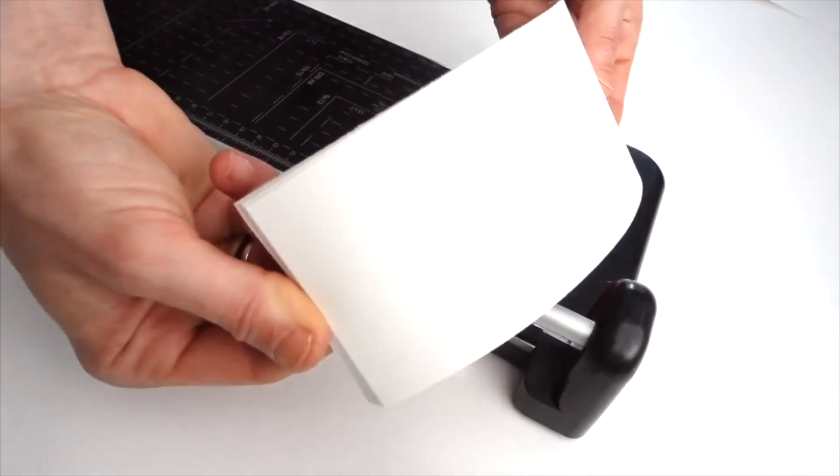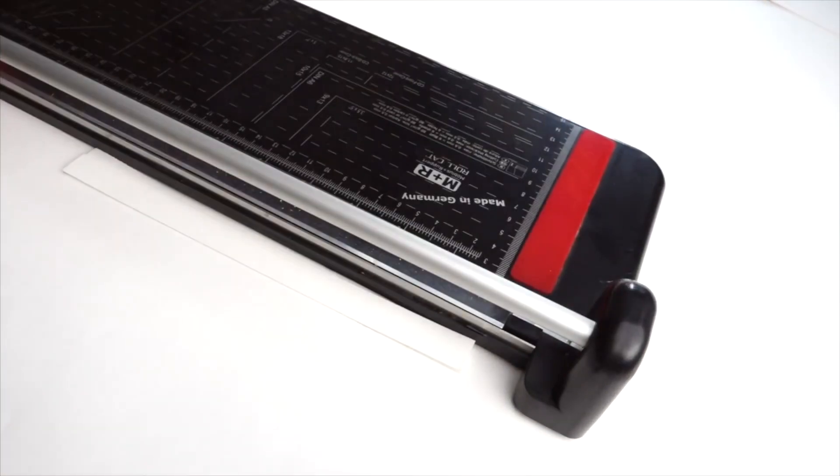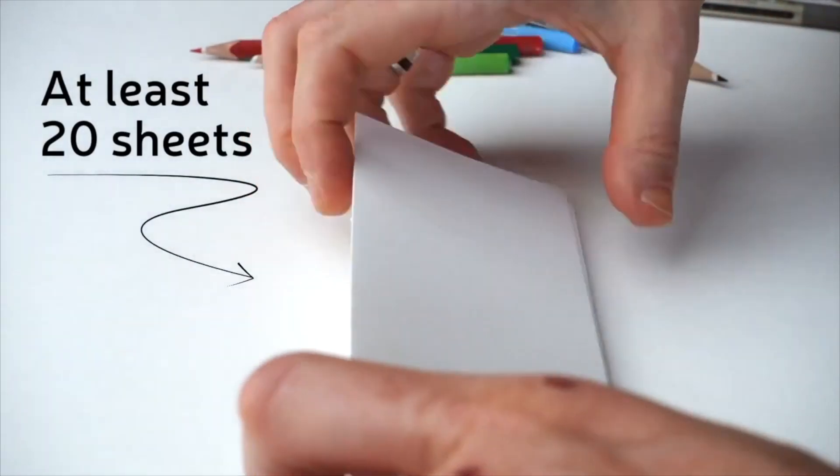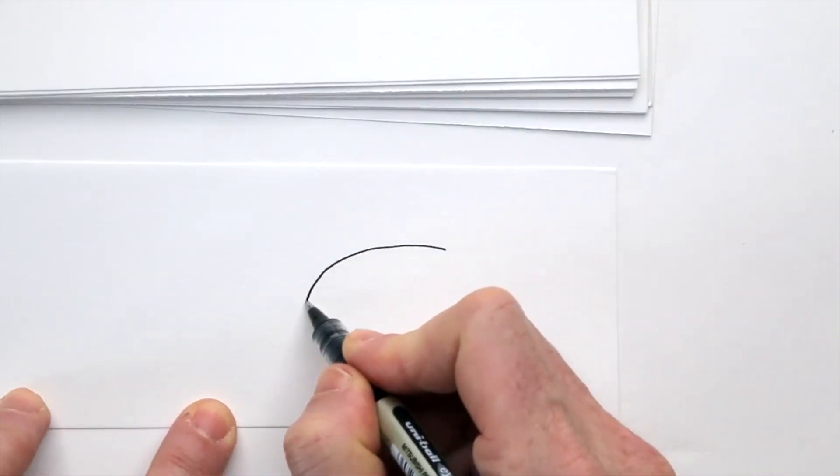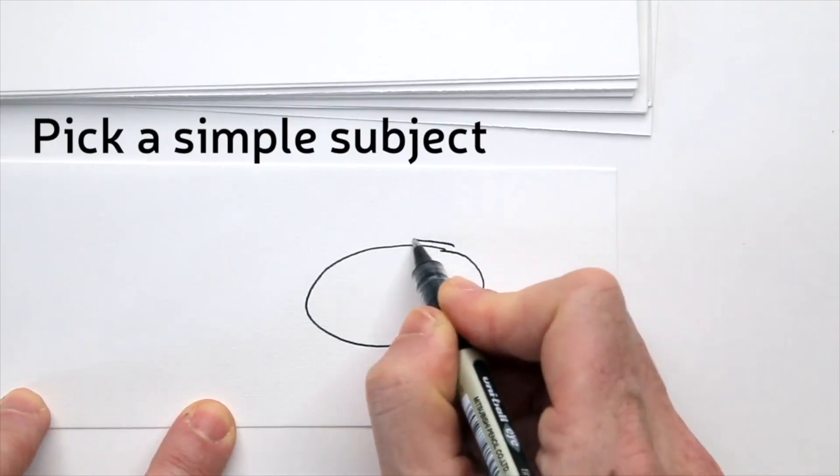Choose landscape format, so it'll be easy to flip your pages later. Now that you have a stack of paper, you're ready to draw. Use a black pen. If you want, you can add color too, later. Pick a simple subject.